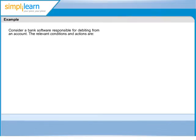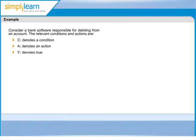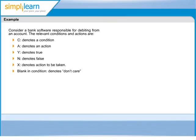Let us look at an example of software related to a bank which is responsible for debiting an amount from an account. In the table, C indicates condition, A indicates action, Y denotes true, N denotes false, X denotes actions to be taken, and a blank value in a cell indicates that the condition will not have any effect on the action to be taken. Blank in actions indicates that no action is required.